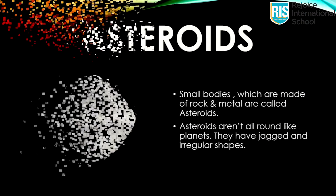Now we will move on to asteroids. Small bodies which are made of rock and metal are called asteroids. Asteroids aren't all round like planets. They have jagged and irregular shapes. Some asteroids are hundreds of miles in diameter, but many more are as small as pebbles.